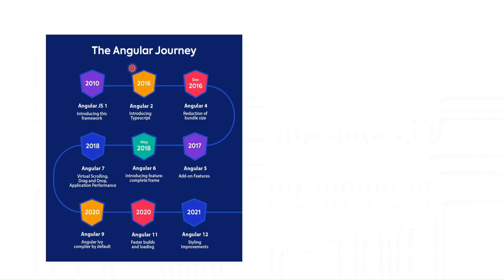Here's the Angular journey in a nutshell: it started in 2010 with a plain JavaScript library, then in 2016 they introduced TypeScript and rewrote the entire application. They then focused on reducing bundle size to optimize performance. They kept adding features — virtual scrolling, drag and drop, animations — and optimizing performance. In 2020, a major breakthrough came with the Ivy renderer, which compiles code very fast. Angular uses a real DOM rather than a virtual DOM, which is actually faster — an interesting topic worth exploring.